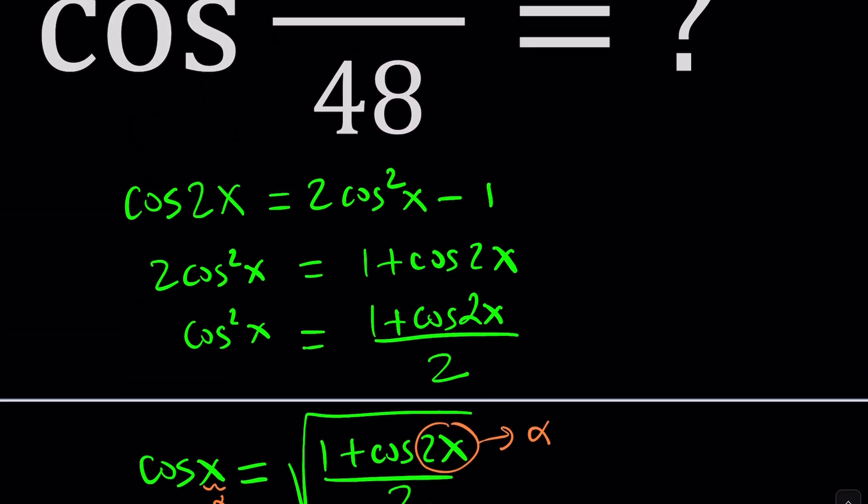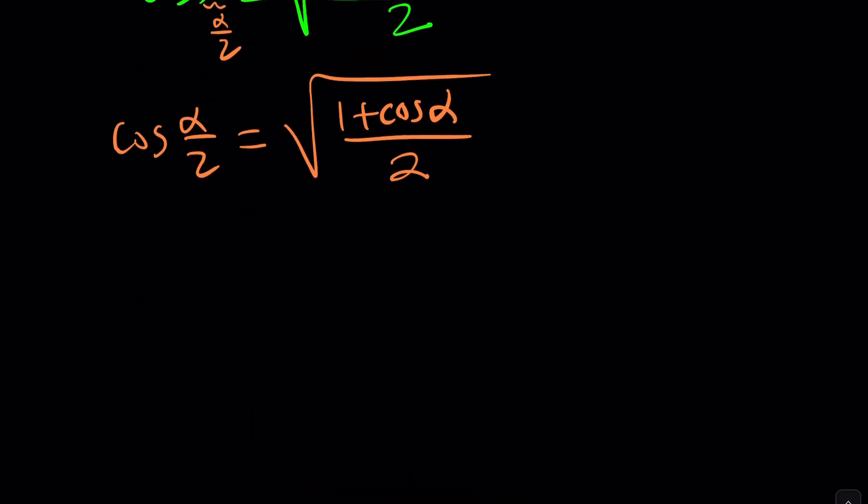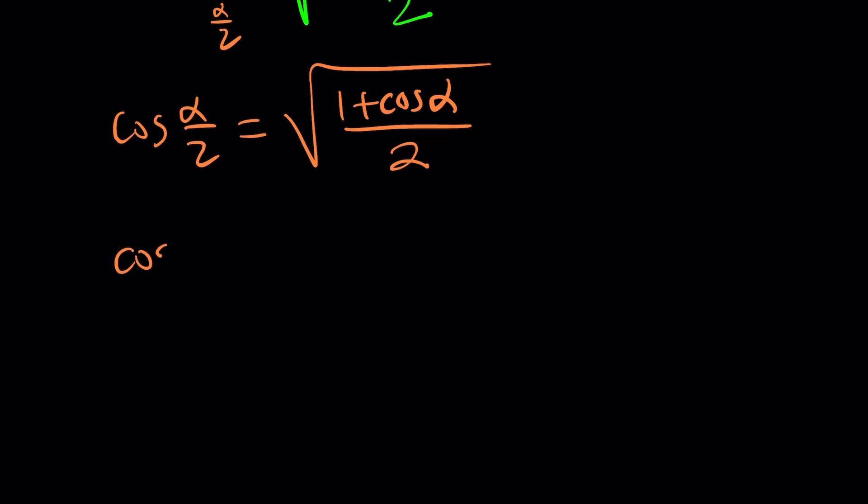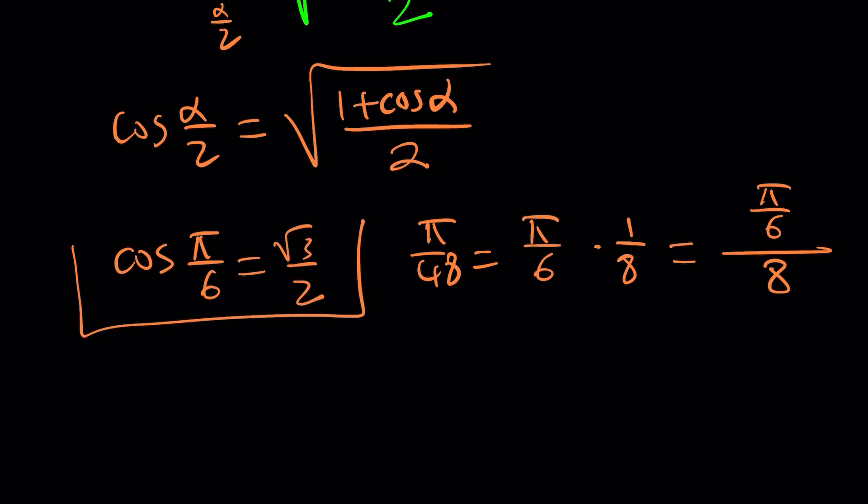Now, we're going to find cosine pi over 48 from here. But where do we start? You start at cosine pi over 6 level. Why? Because pi over 48 is pi over 6 times 1 over 8. In other words, this is one eighth of pi over 6, which means pi over 6 divided by 8. So that means you can start with this. By the way, cosine pi over 6 is root 3 over 2. You can just keep using the formula until you get to pi over 48. Let's see how we can use this formula.